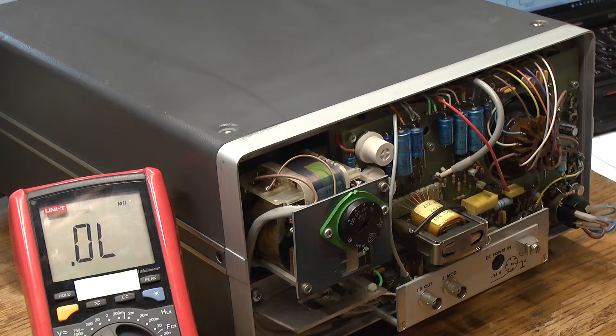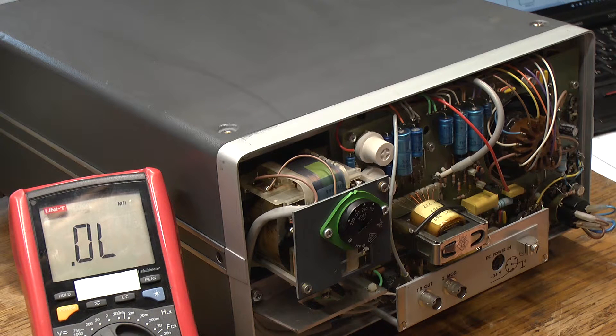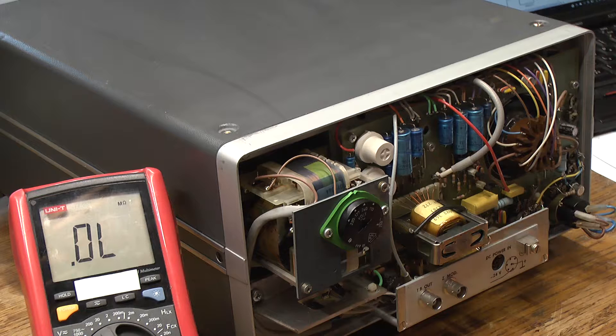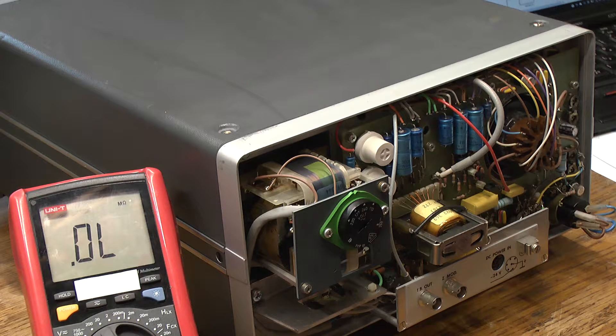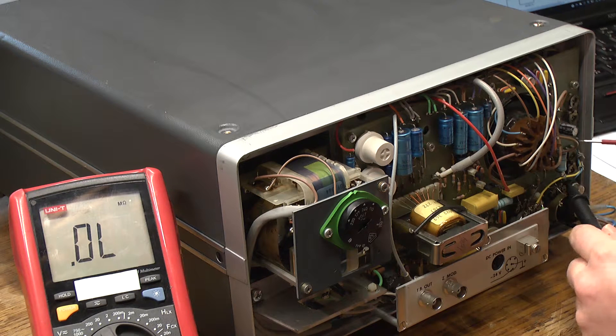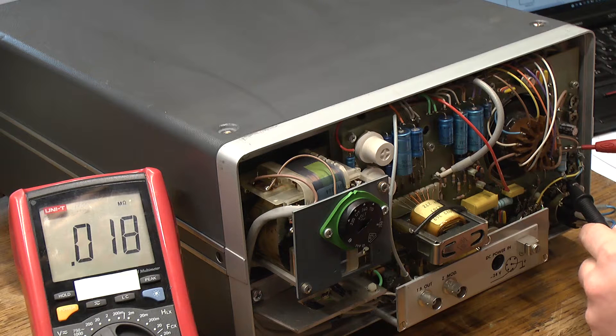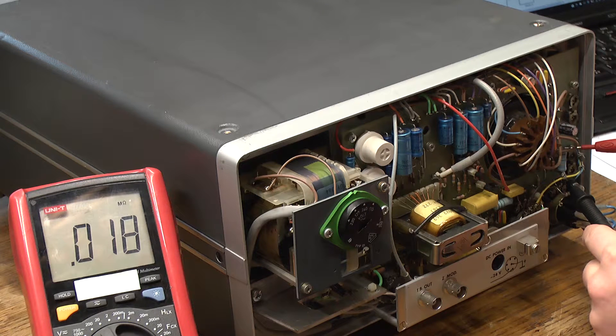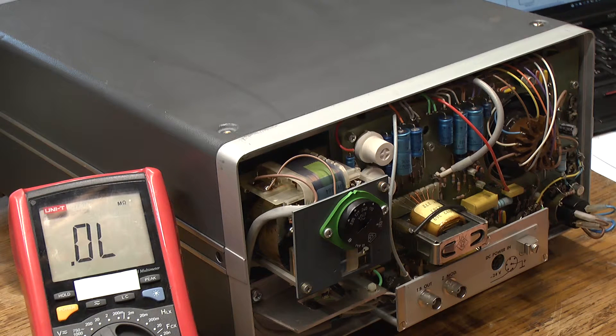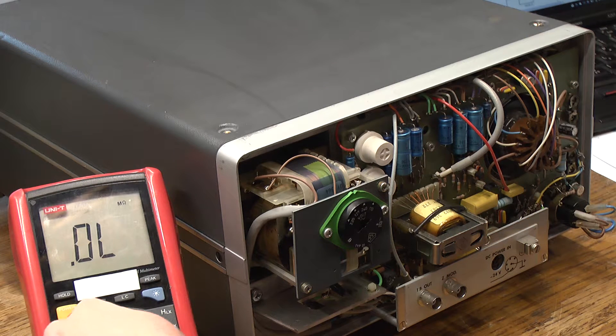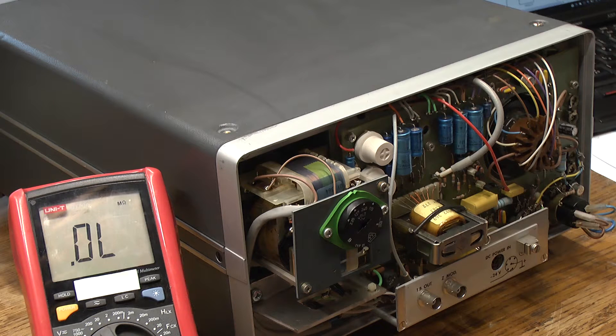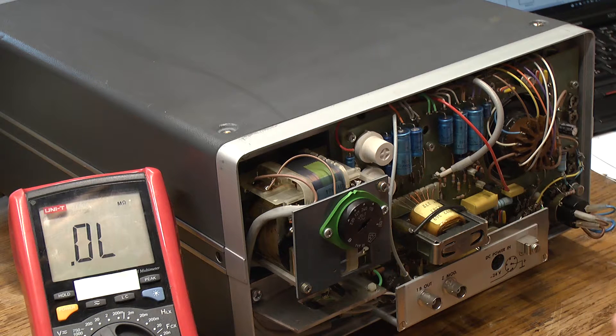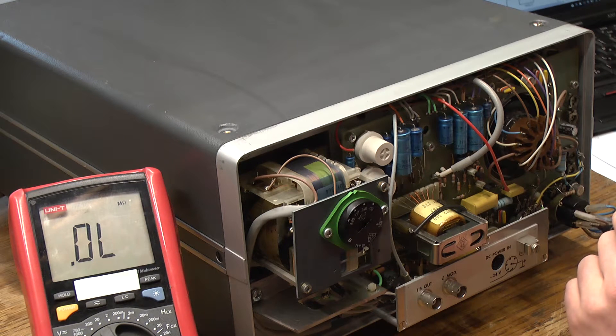So here we go. We have R807, should be 1.8 megaohms. Let's test this in circuit, see what happens. Well that's considerably lower, so it must be bridged by something. We have R810, should be 820 kiloohms. So let's see what this is. I can find that.